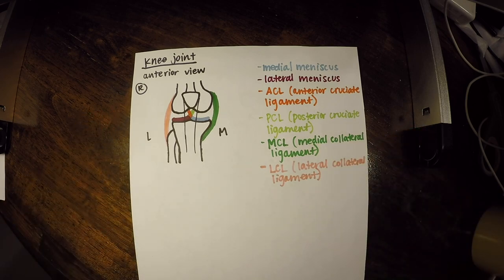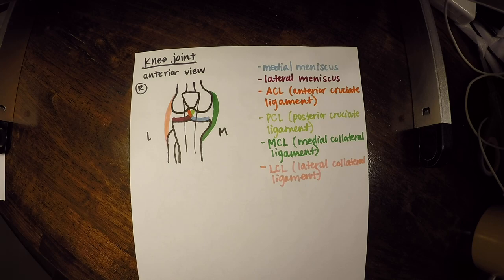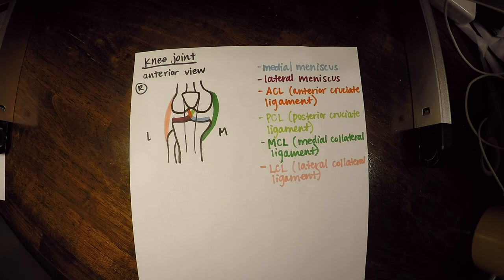We're drawing extra attention to the knee because it's a great example of a complex joint with multiple stabilizing structures, and because many injuries occur here. If you injure your meniscus, ACL, and MCL together, that's known as an unhappy triad, which can happen during sporting events.